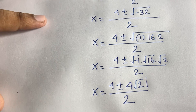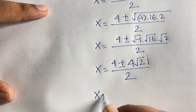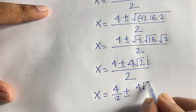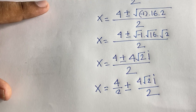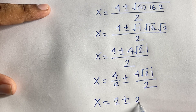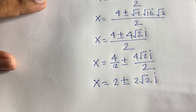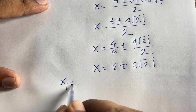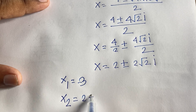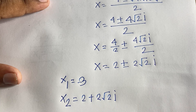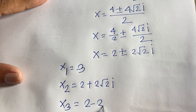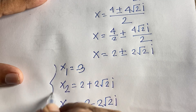Simplifying: x = 4/2 ± (4√2 · i)/2, which gives x = 2 ± 2√2 · i. So our three solutions are: x₁ = −3, x₂ = 2 + 2√2 · i, and x₃ = 2 − 2√2 · i. This is our final answer.